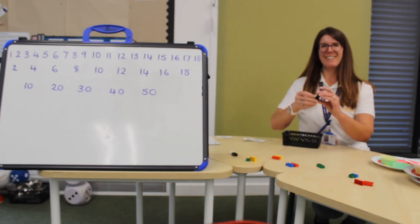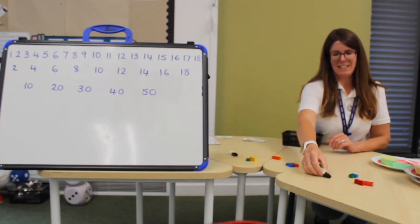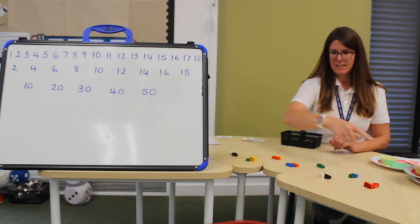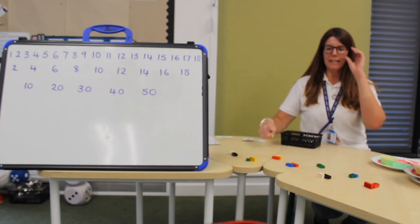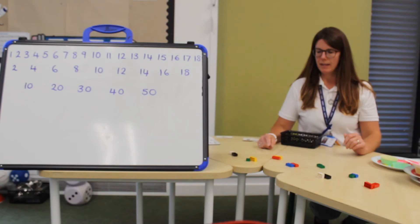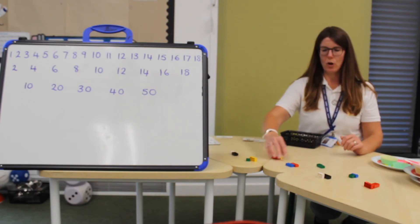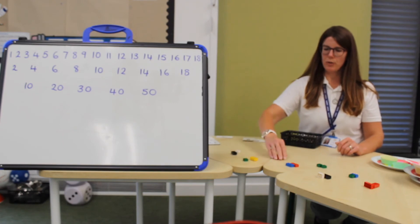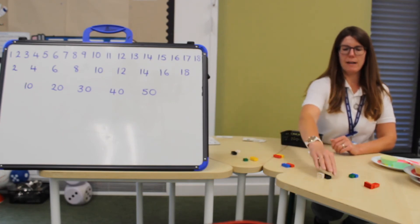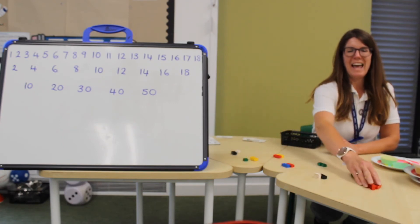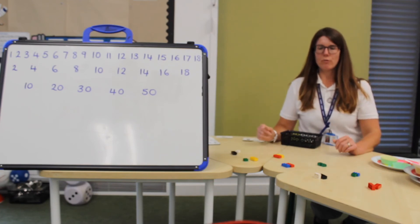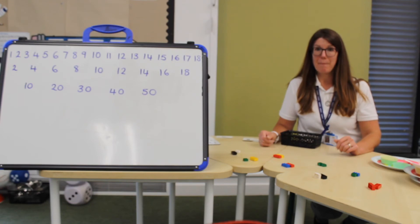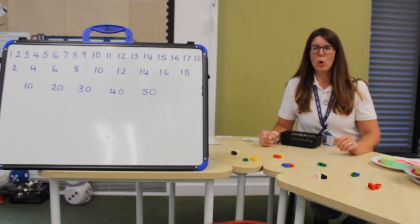This time I have sixteen Lego cubes in groups of two. There are one, two, three, four, five, six, seven, eight groups of two which makes sixteen all together.